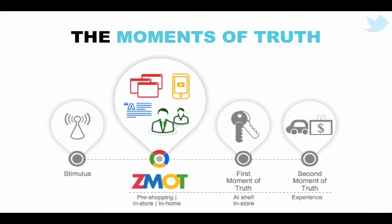Being able to understand the zero moment of truth model — the moments of truth model — really helps us understand where Twitter ads and Twitter as a platform can be used across each of these different stages. It's important that we understand this because our objectives for using Twitter ads will very often determine the type of tweet created, the offer, the incentive, the promotion, whether we're looking to get people to download an application, submit data, or various other ways of using Twitter ads. In the next lecture, we'll look directly at how Twitter impacts each of these four key moments in today's dynamic customer journey.